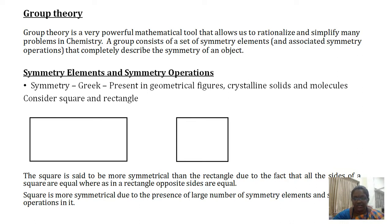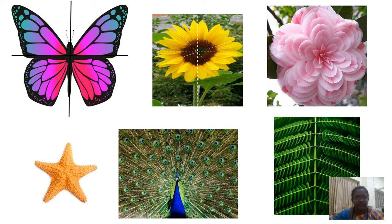The word symmetry is derived from Greek and is present in geometrical figures, crystalline solids, and molecules. Consider a square and a rectangle: the square is more symmetrical than the rectangle because all sides of the square are equal, whereas in the rectangle only opposite sides are equal. Some naturally occurring symmetric materials include butterfly, sunflower, rose, starfish, peacock, and leaves of a plant — symmetricity is present in nature itself.